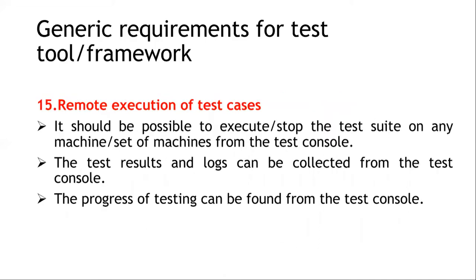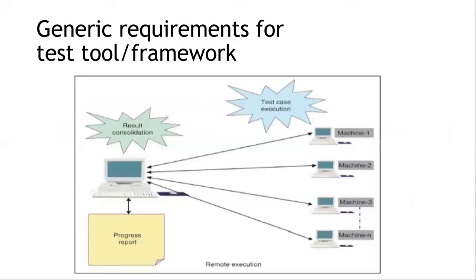The next requirement is remote execution of test cases. A central machine can control a set of machines for executing multiple test cases. Test results and logs can be consolidated into the central machine, and a progress report of testing can also be seen from the test console — which is the central machine. The pictorial representation shows a test controller on the left side distributing test case execution to multiple machines, with result consolidation and progress reporting.